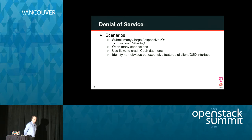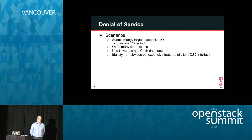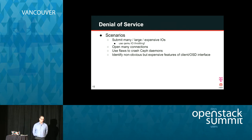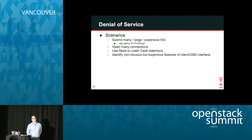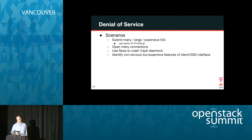We also have denial of service as an attack vector. An attacker could submit large or many small I/O operations and take the cluster out that way, so you may have to use QEMU I/O throttling to mitigate that. On the other hand, you could also open a lot of connections to bring down the cluster, and you could crash the cluster if you find a flaw. There may also be expensive features in the Ceph object interface that could be used to run a denial of service attack.